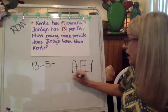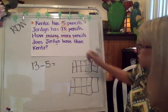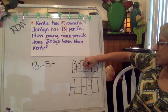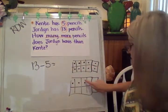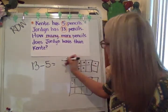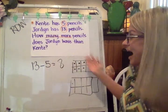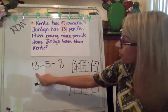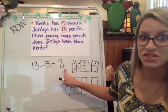Maybe you could even use a double 10s frame. If I had 13 dots, I'm going to fill in my top of my 10 frame and then come down below and draw three more. Then I'm going to erase five — one, two, three, four, and five. I know that five on the top and three on the bottom means that there are eight. So how many more pencils does Jordan have than Kente? Eight. First I drew 13 on my double 10 frame, then I subtracted five, so I know the answer is eight.